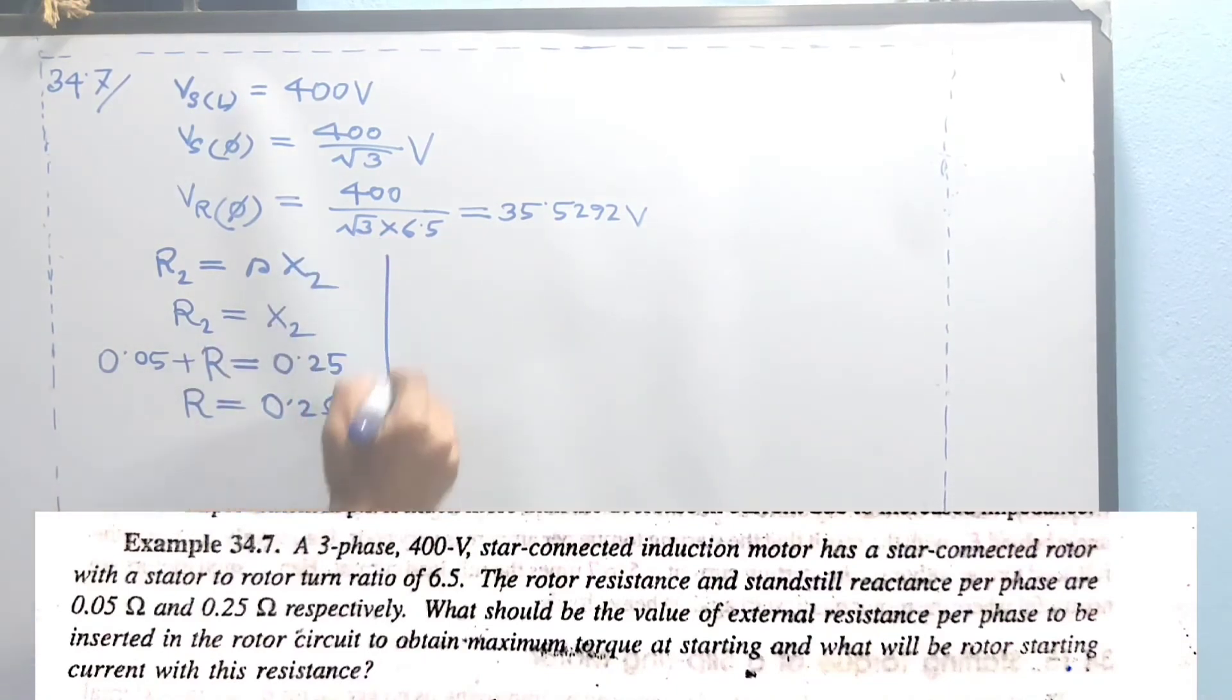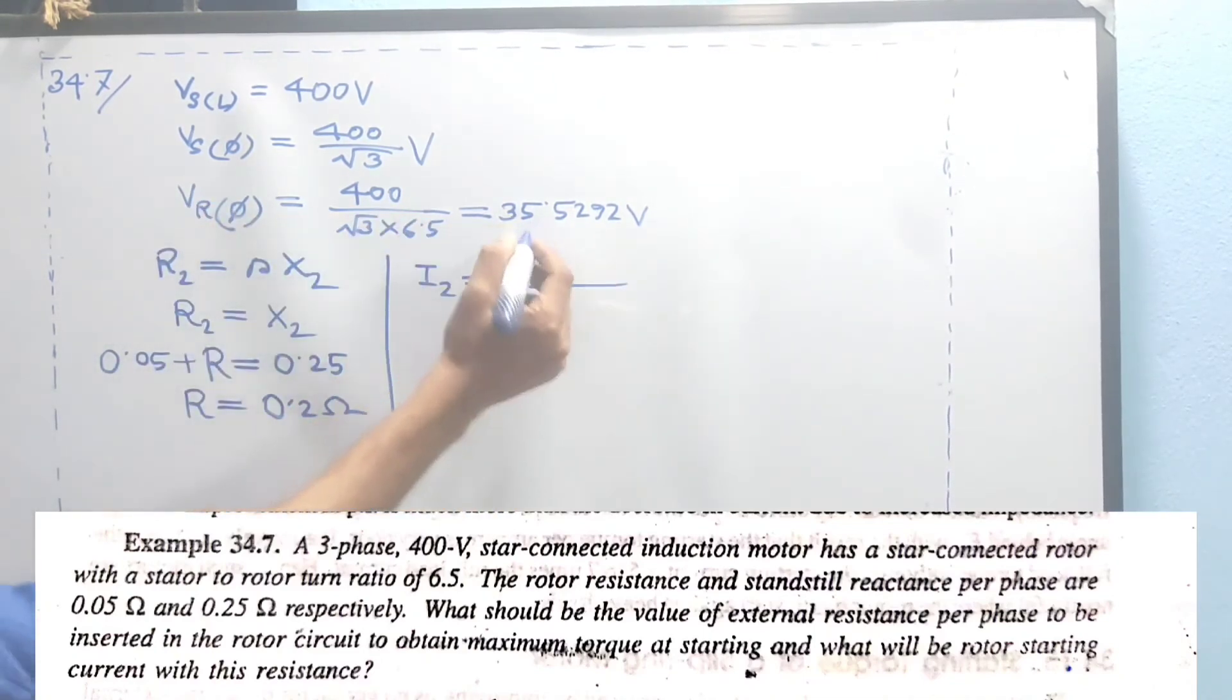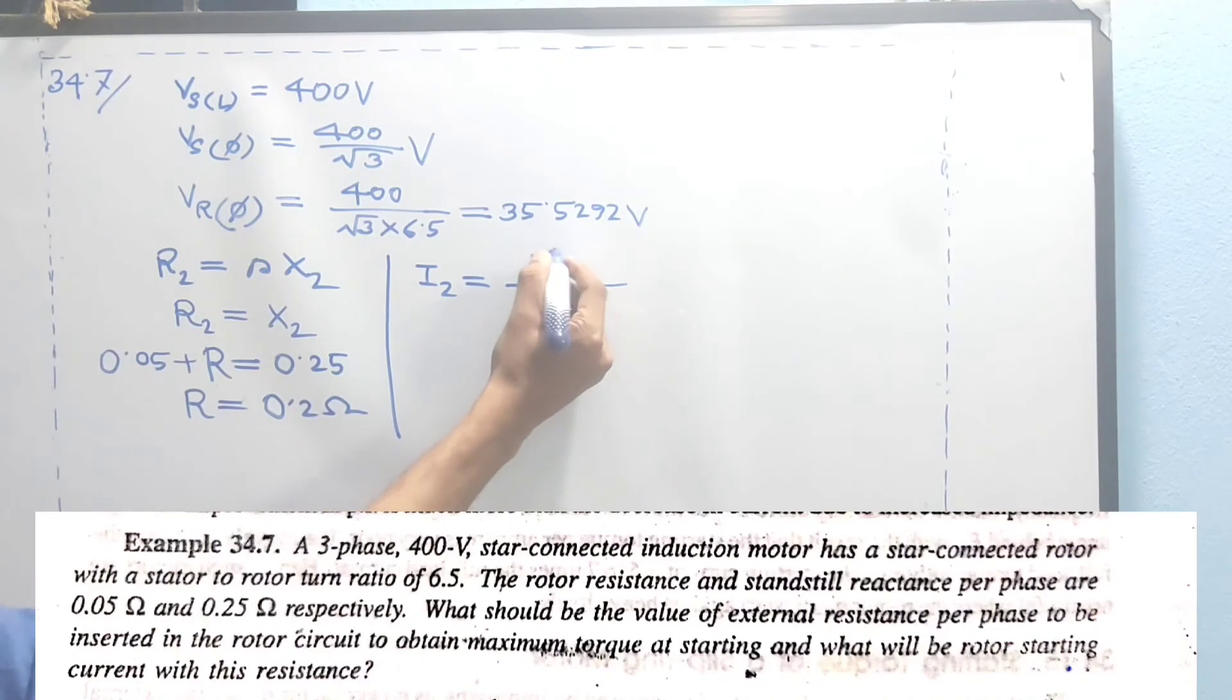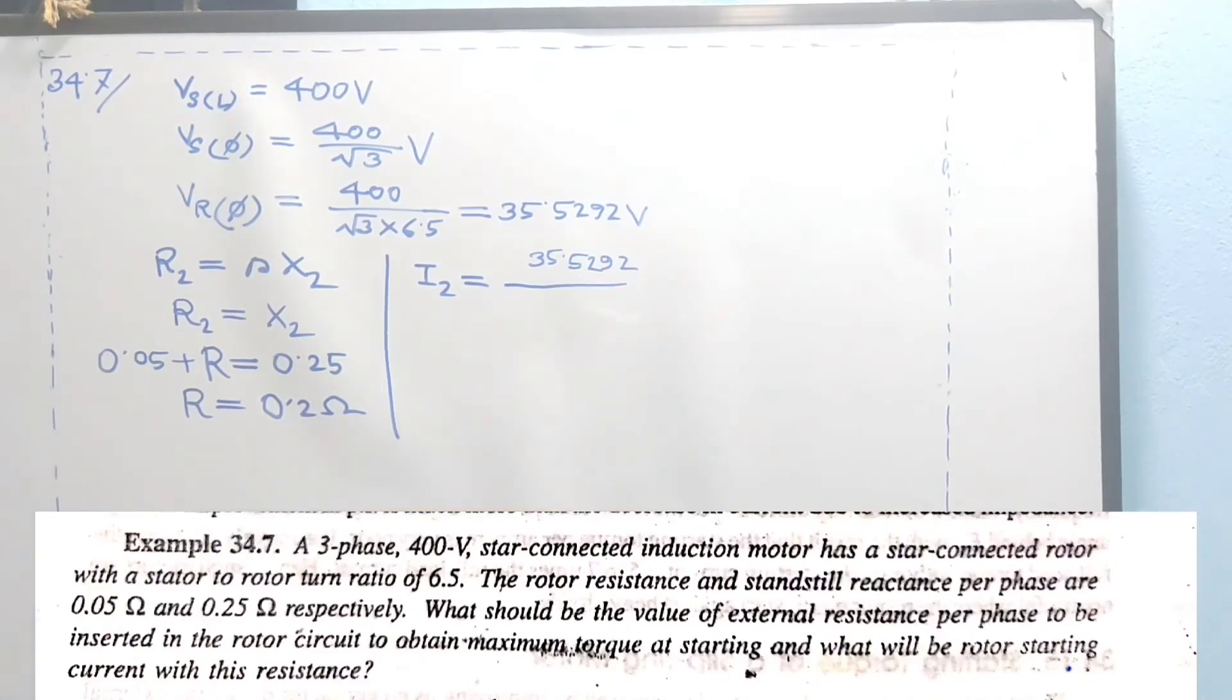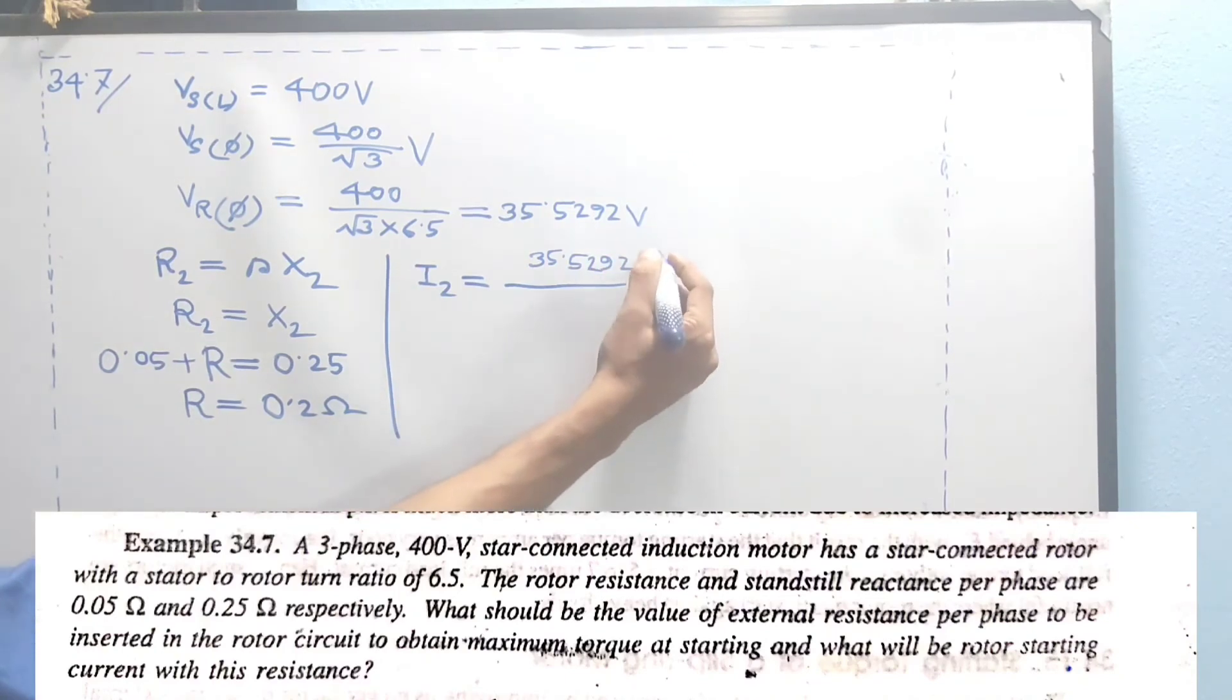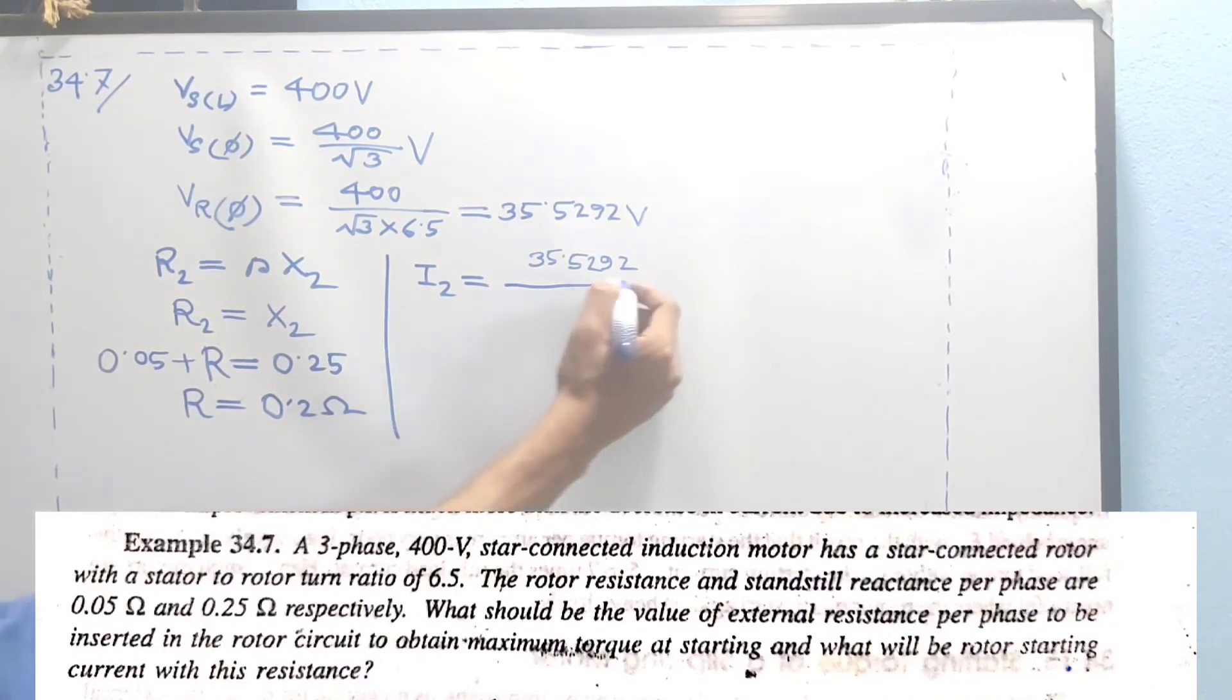We need to find the current I2. I2 is simply the rotor voltage divided by impedance. The rotor voltage is V_R(Φ) and by default the reference angle is 0 degrees. I2 equals V divided by Z.